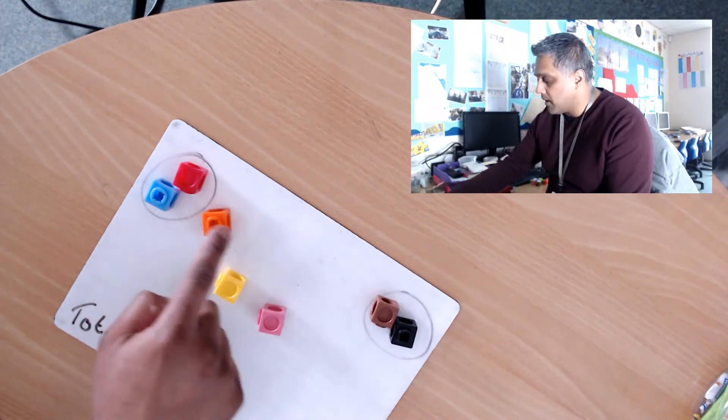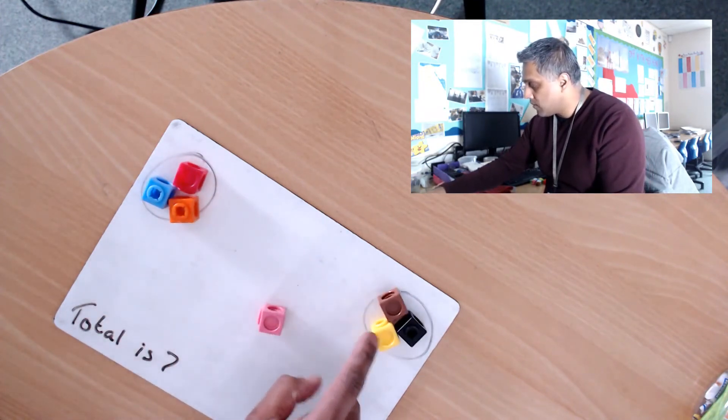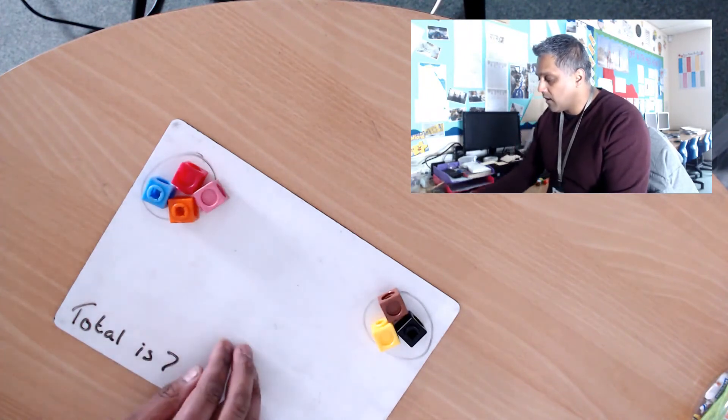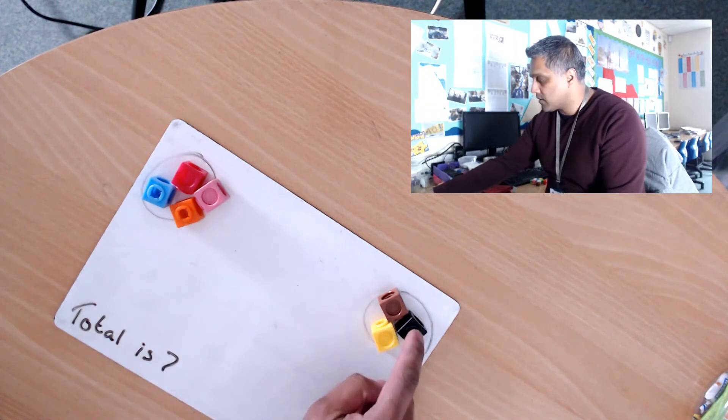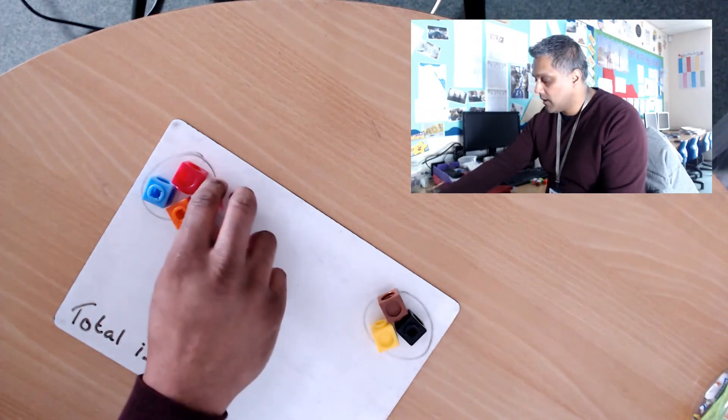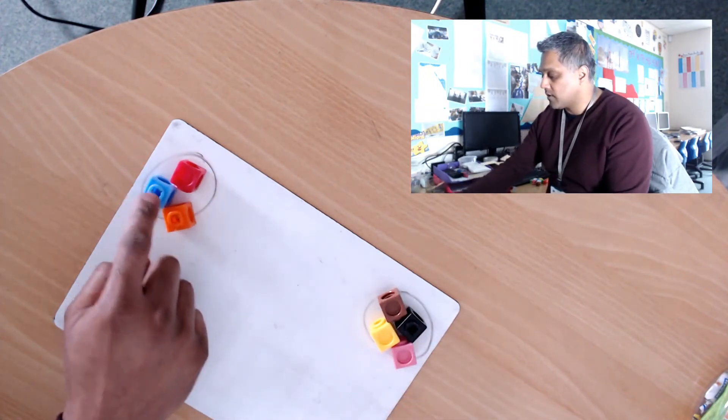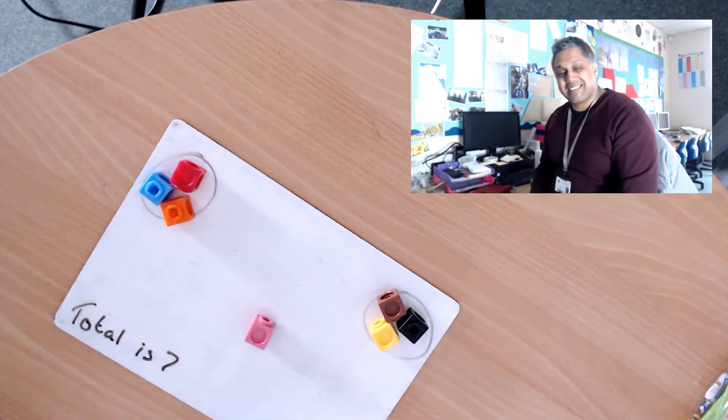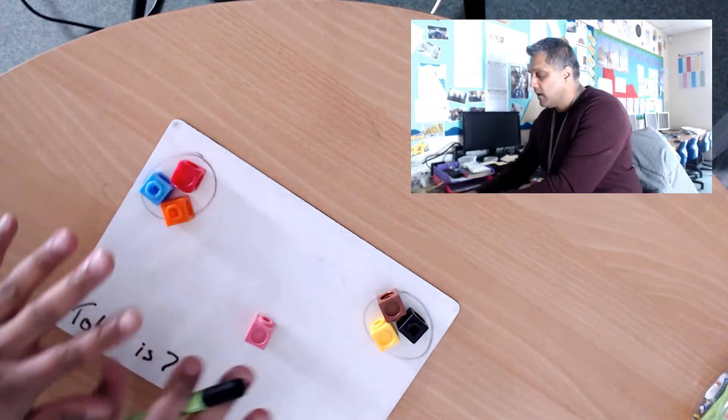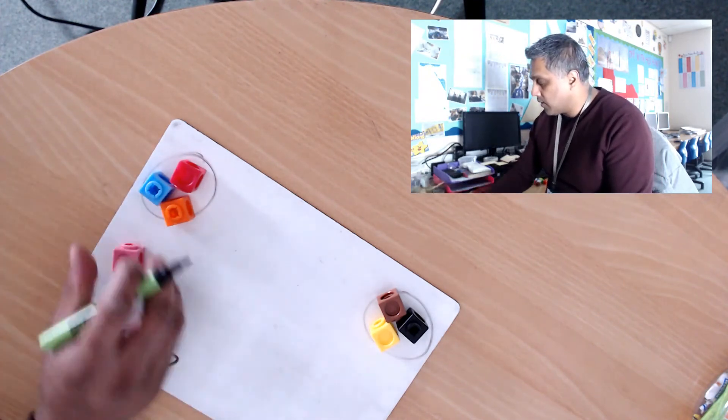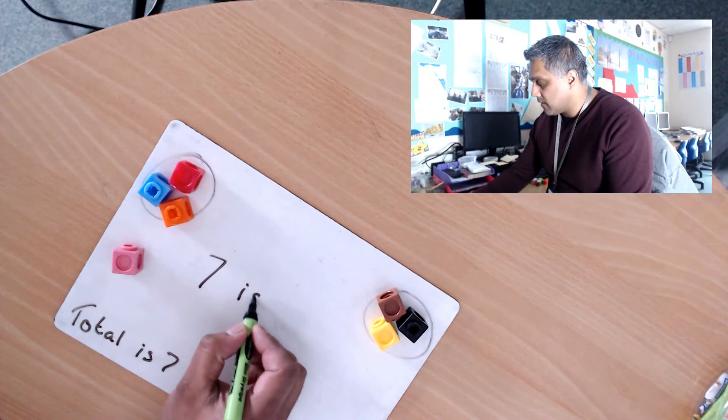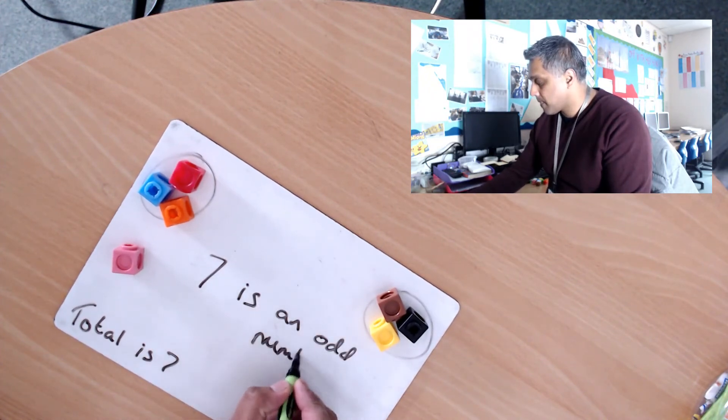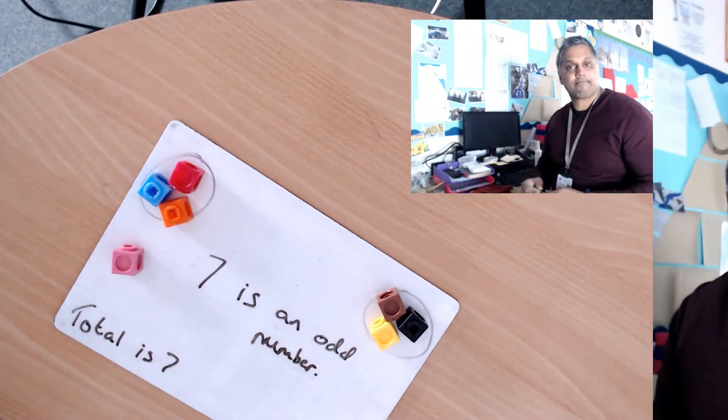Hmm, I can't. If I put in this group here, I'll have one, two, three, four, but this group will have one, two, three. So that's not equal. If I put it over here, I'd have one, two, three and one, two, three, four. That's not fair. So this number, number seven, I cannot share it equally into my two groups, so seven is an odd number.